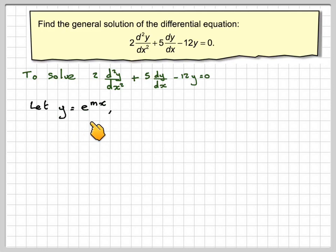If we say from the previous video, which you should watch first, that y is equal to e to the mx, in order to substitute that into here, we need to differentiate that. So we're going to get dy by dx is m e to the mx, and then the second derivative is m squared e to the mx.